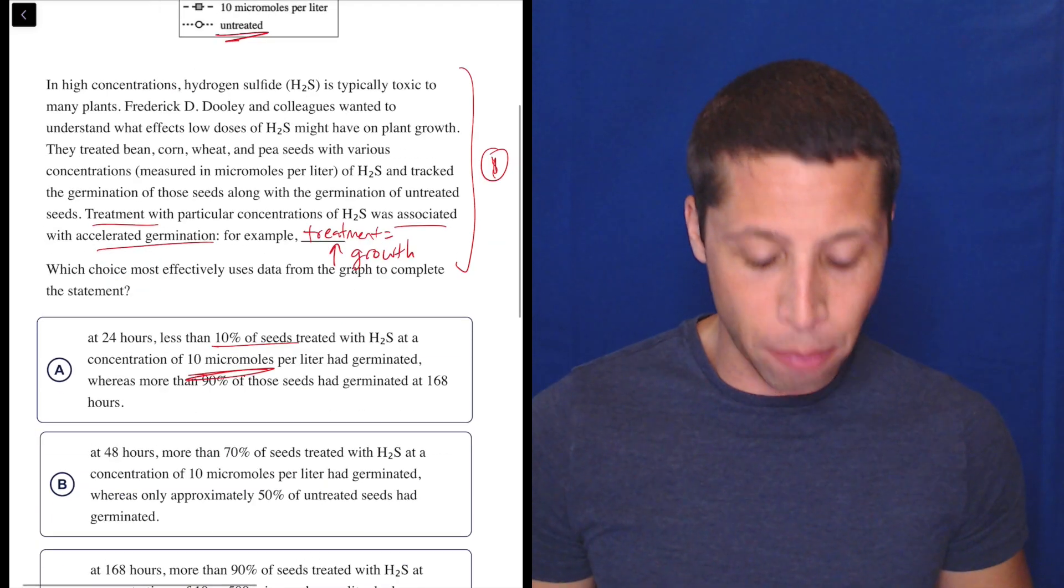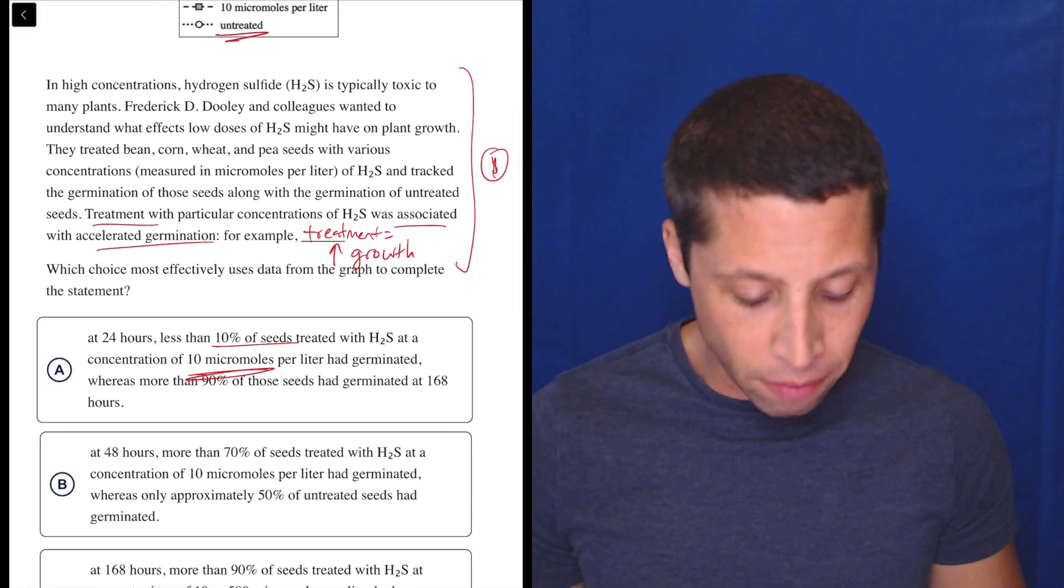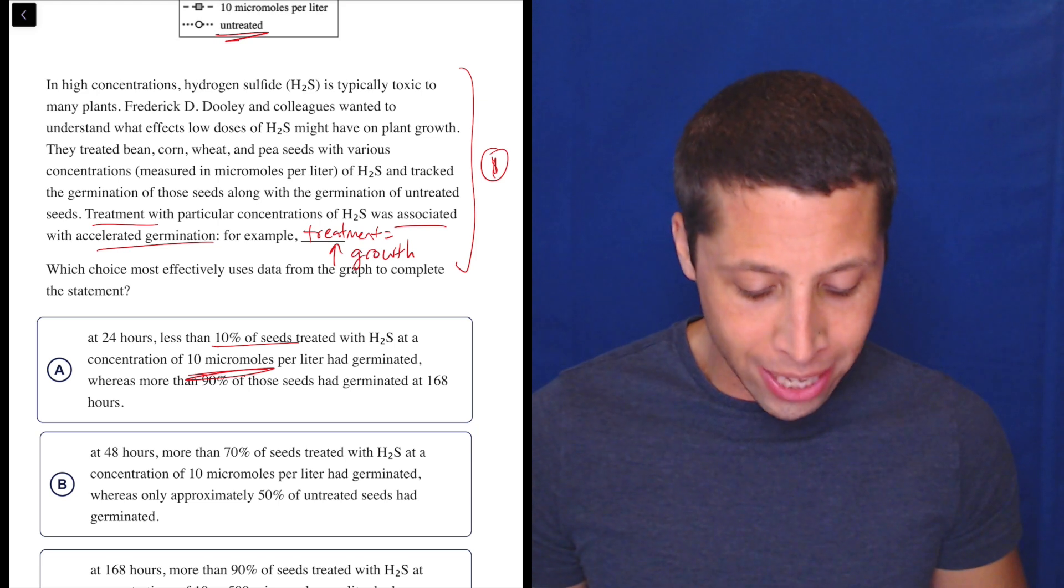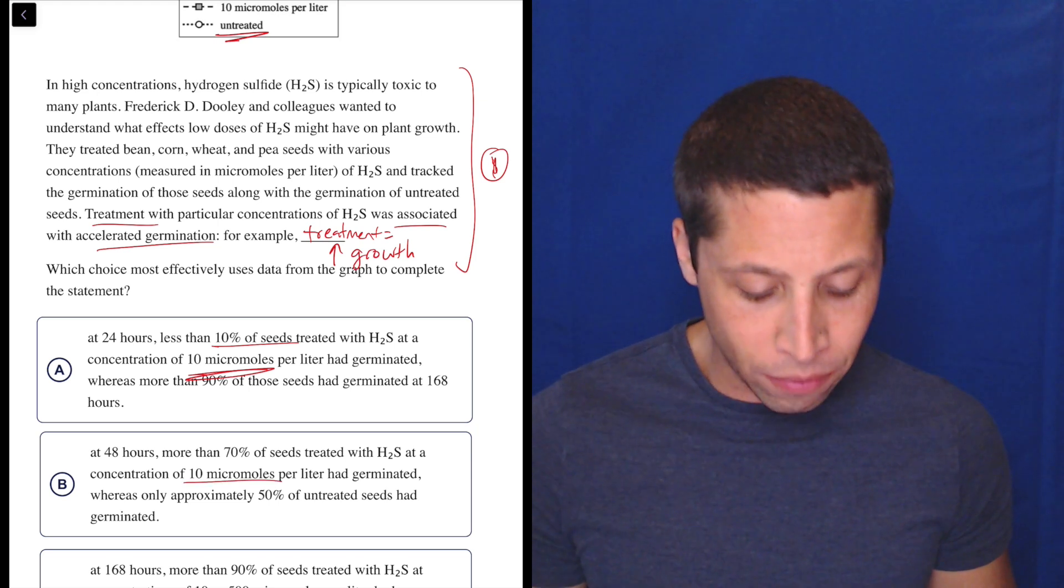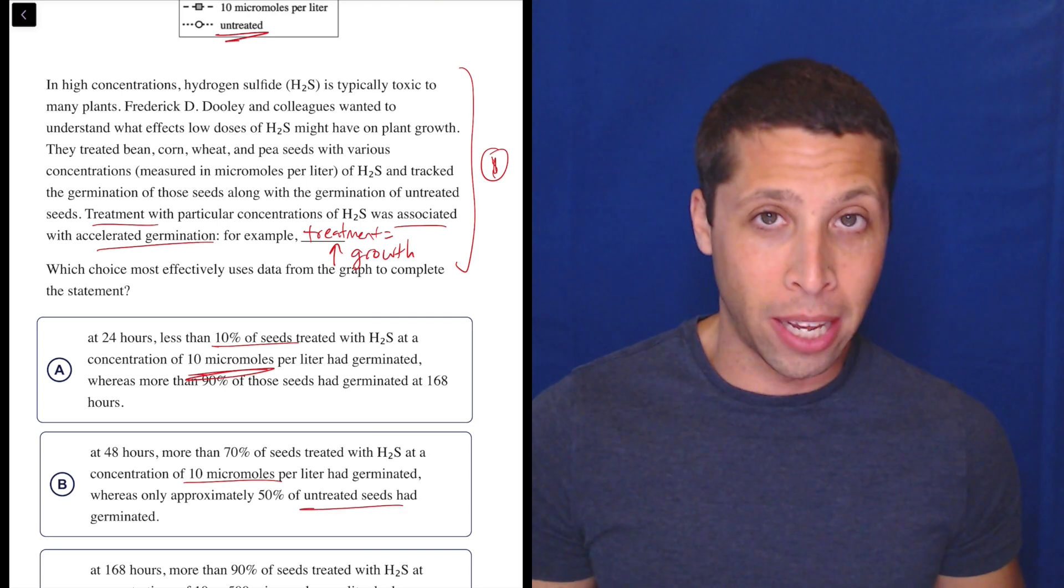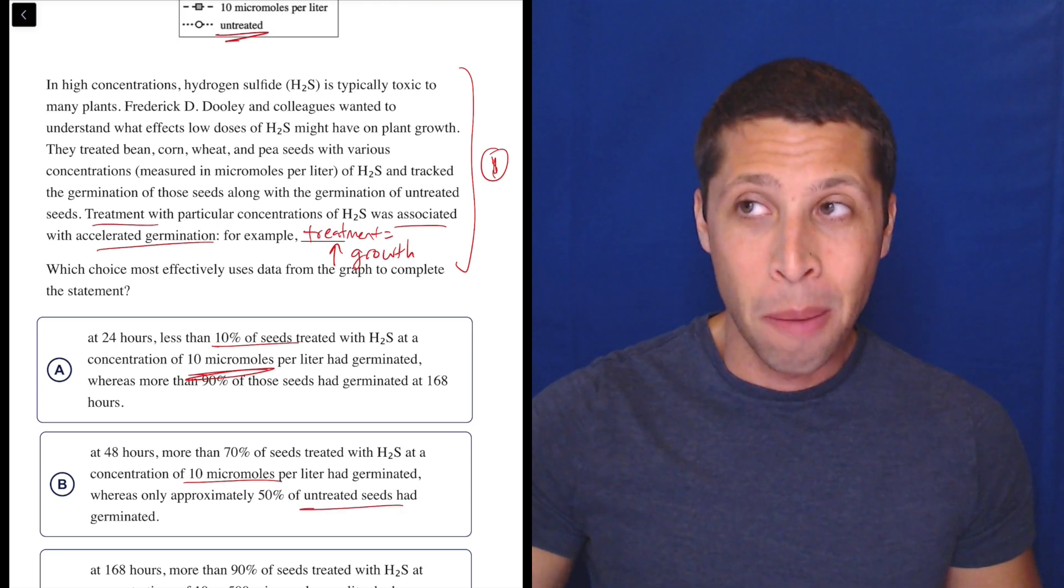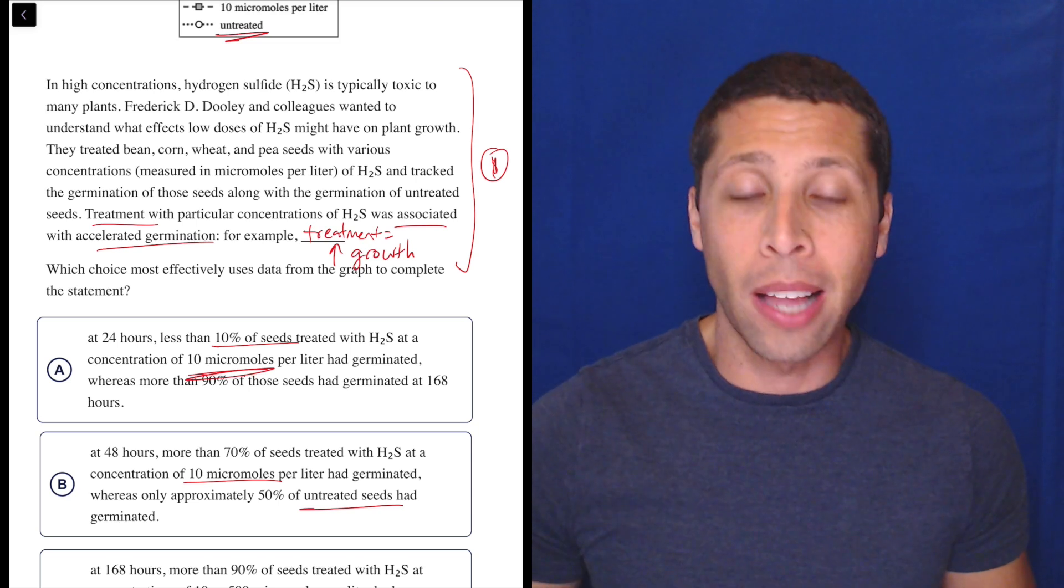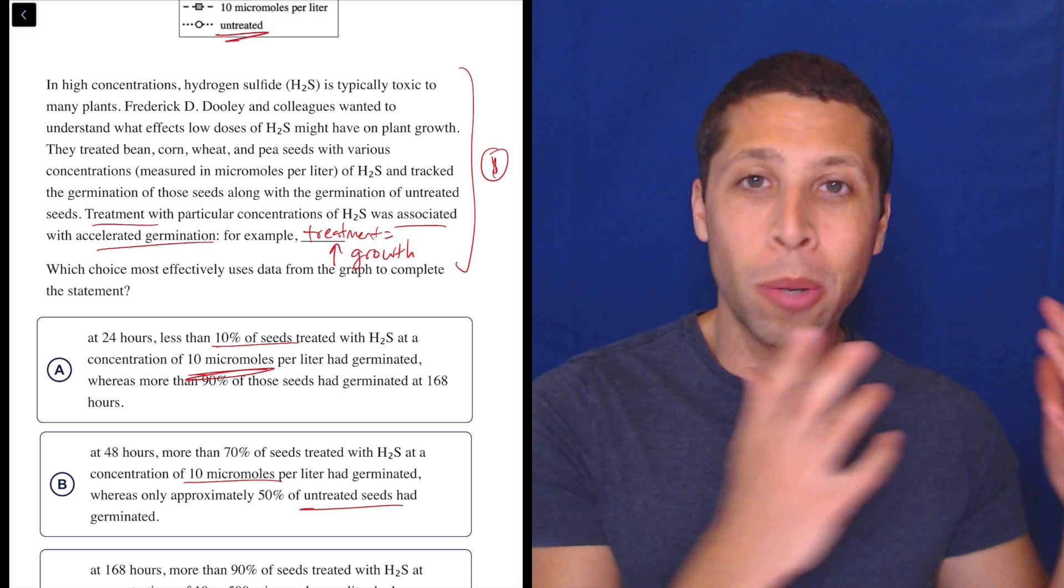Hopefully that makes sense, because let's compare that with choice B, and I think you'll see the difference. At 48 hours, more than 70% of seeds treated with hydrogen sulfide at a concentration of 10 micromoles per liter had germinated, whereas only approximately 50% of untreated seeds had germinated. So again, we can go and test the accuracy of that.